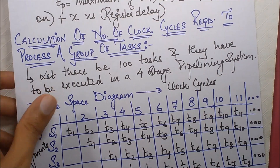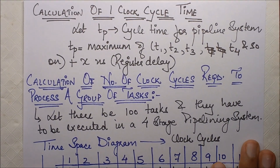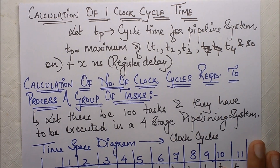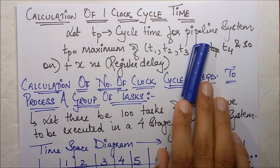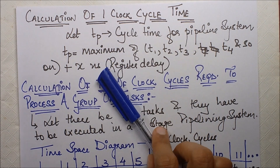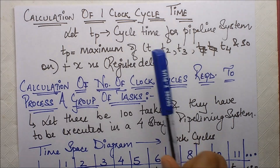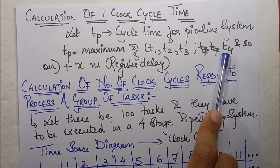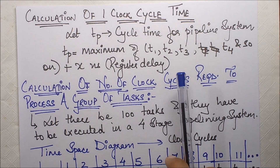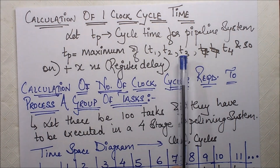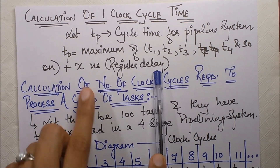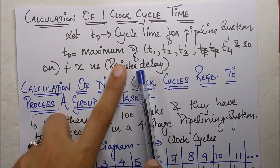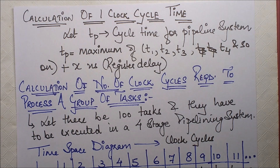Now let's calculate the time of one clock cycle. Let tp be the cycle time for the pipeline system. For a four-stage pipeline, tp will be the maximum of t1, t2, t3, t4 plus x nanoseconds, which is the register delay. We add the register delay only once. So the cycle time is the maximum execution duration of any one stage plus the register delay.